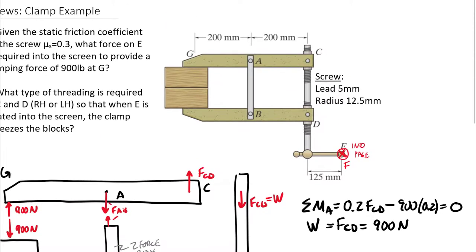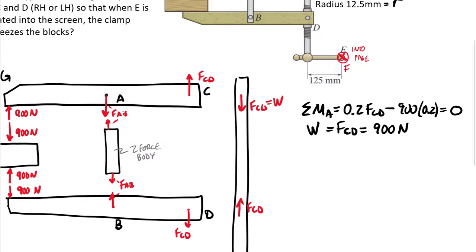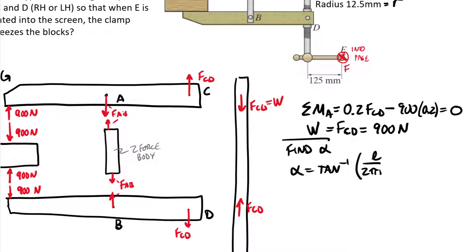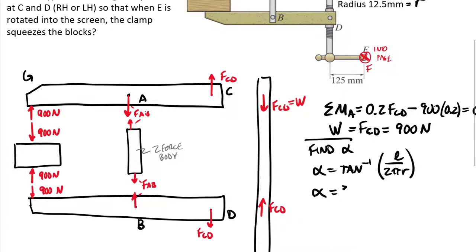We were given the lead L and mean radius R of the screw, from which we can compute the thread pitch angle alpha. Alpha equals the inverse tangent of the lead divided by the circumference 2πR. Plugging those values in, our thread pitch angle alpha equals 3.643 degrees.